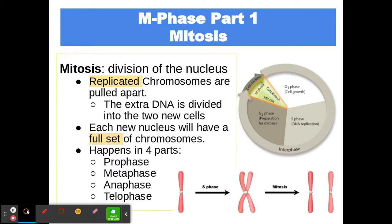Let's look at mitosis. We take the nucleus and divide it into two nuclei. Those Xs we made in interphase are pulled apart into individual chromosomes, so each new cell has a nucleus with a full set of chromosomes. We create two nuclei, each with a full set. Mitosis happens in four steps: prophase, metaphase, anaphase, and telophase.